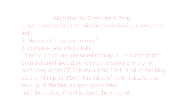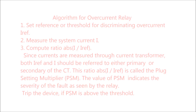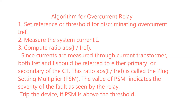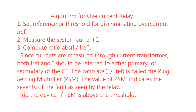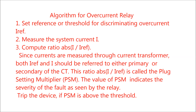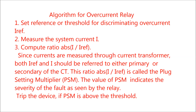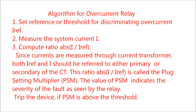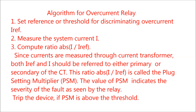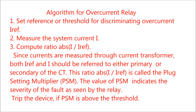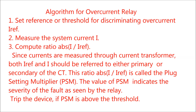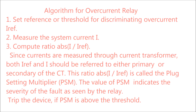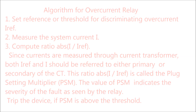For the overcurrent relay, we have to set a reference or threshold for discriminating overcurrent, that is IREF. Then we have to measure the system current I, and compute the ratio — the absolute value of I divided by IREF. Since the current is measured through a current transformer (CT), both IREF and I should be referred to as primary or secondary of the CT. This ratio, |I|/IREF, is called the Plug Setting Multiplier or PSM. The value of PSM indicates the severity of the fault as seen by the relay — the higher the PSM, the greater the fault current.